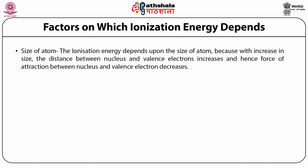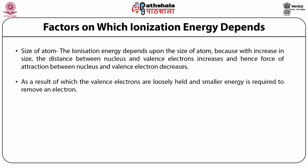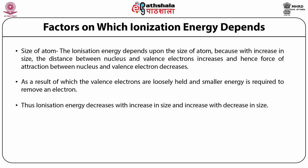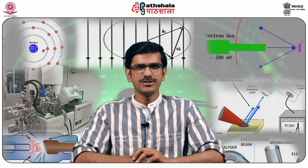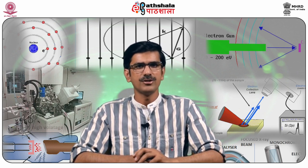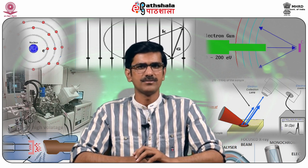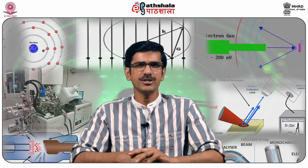The factors on which ionization energy depends: first is the size of the atom. The ionization energy depends on the size of atom because with an increase in size, the distance between nucleus and valence electrons increases, and hence the force of attraction between nucleus and valence electron decreases. As a result, the valence electrons are loosely held and smaller energy is required to remove them. Therefore, ionization energy decreases with increase in size and increases with decrease in size. Regarding nuclear charge: as nuclear charge increases, the force of attraction between nucleus and valence electrons increases, making it more difficult to remove an electron, so ionization energy increases with increasing nuclear charge.